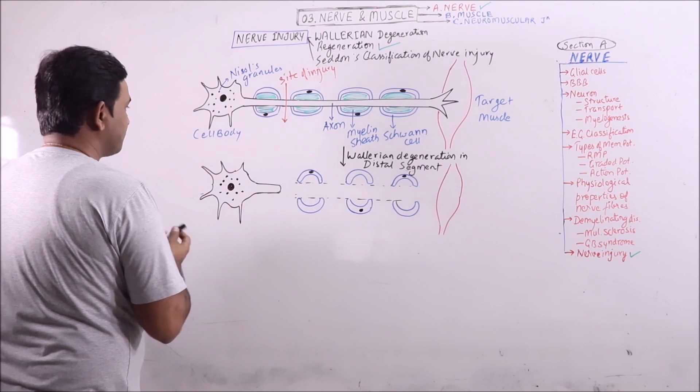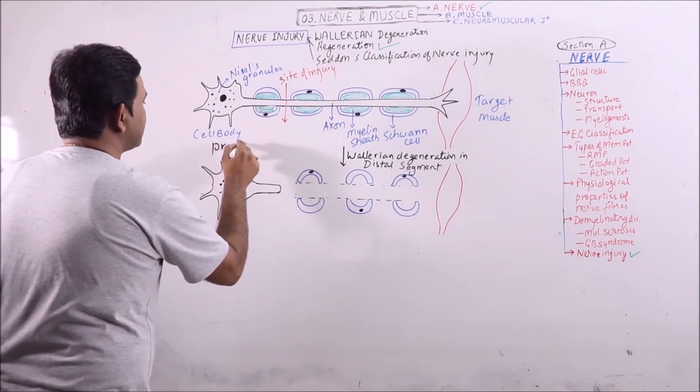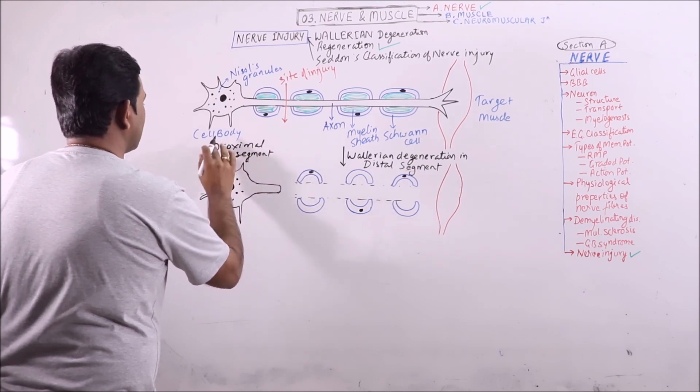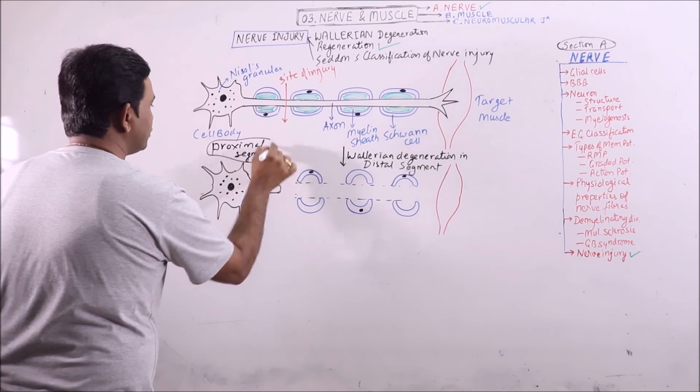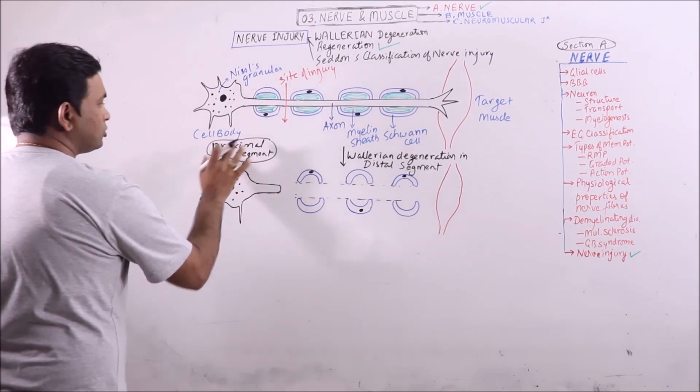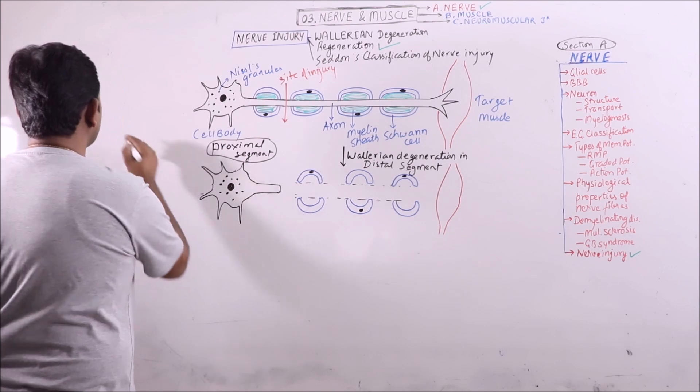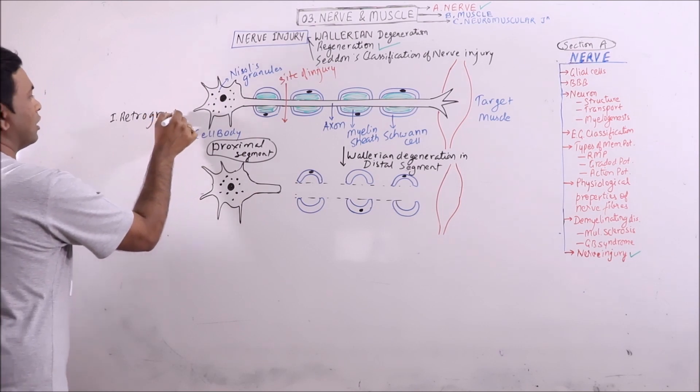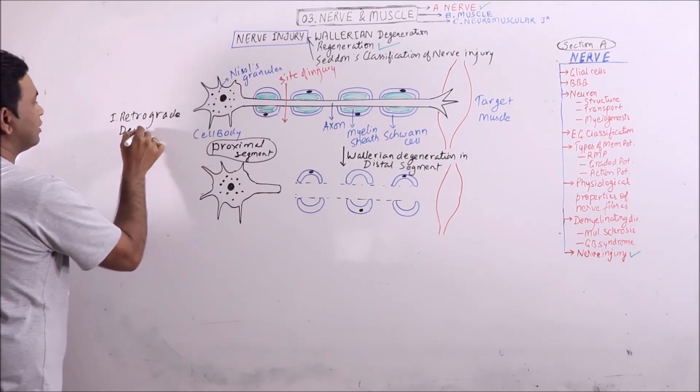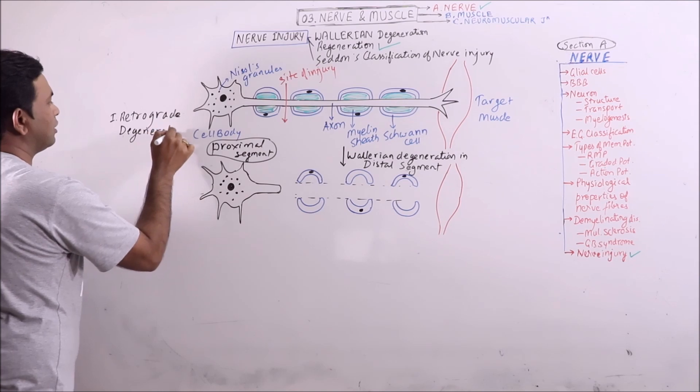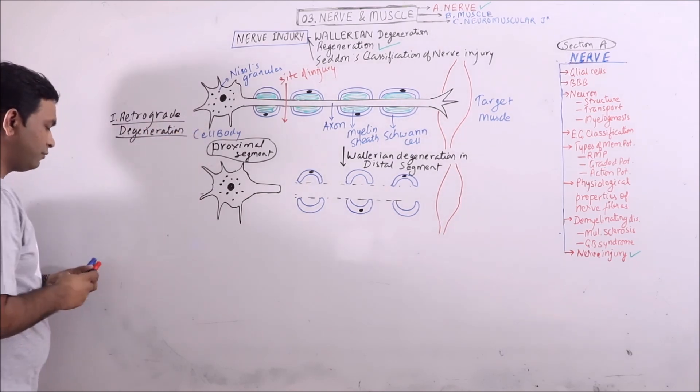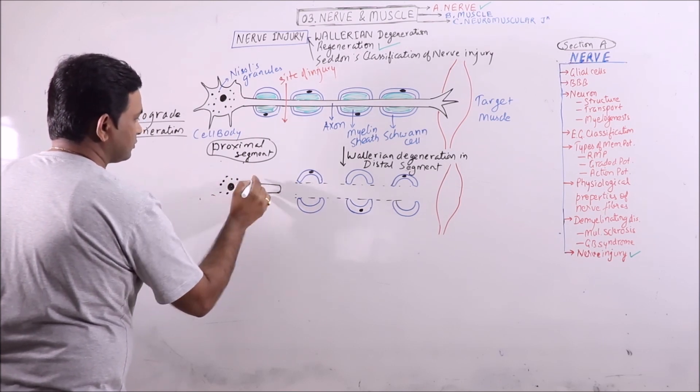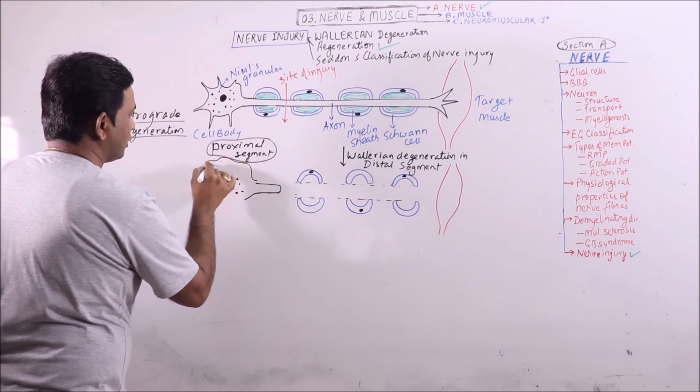Now, what are the changes that will occur in the proximal segment? After following injury, some degenerative changes also occur in the proximal segment. These degenerative changes are termed as retrograde degeneration in which the cell body swells up and becomes round.